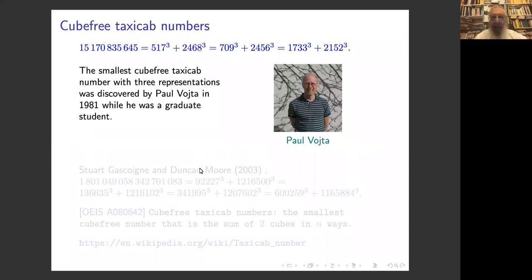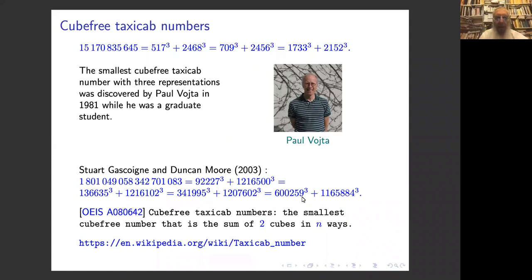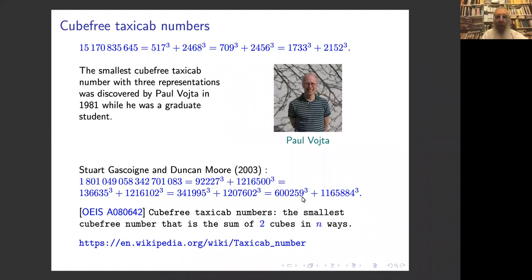There is another sequence of cube-free taxicab numbers. The smallest cube-free taxicab number, which is a sum of two cubes in three ways and is cube-free, was found by Vojta in 1981. There is another one which is a sum of two cubes in four ways and cube-free. The question is whether this list is finite or not. By a result of Silverman, if the sequence of cube-free taxicab numbers with n representations is infinite, then the Mordell–Weil rank of the elliptic curve x³ + y³ = a_n tends to infinity with n.